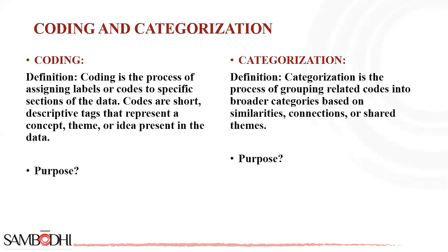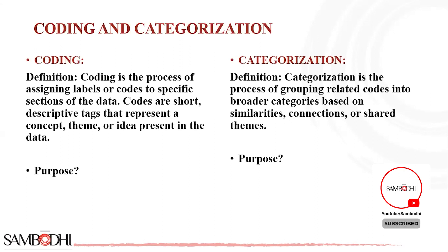What is coding? It is the process of assigning labels or codes to specific sections of the data. Codes are short, descriptive tags that represent a concept, theme or idea present in the data. The purpose of coding helps in organizing and structuring the data, making it easier to manage and analyze. It allows researchers to identify patterns, themes and insights that emerge from the data.